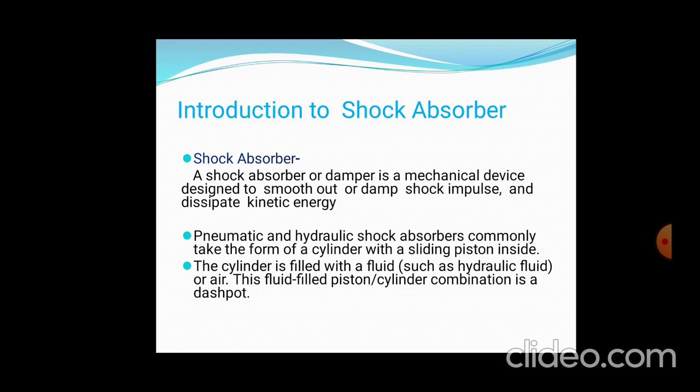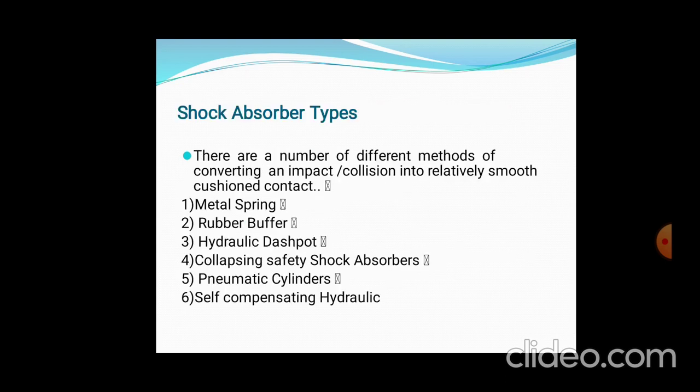This fluid-filled piston-cylinder combination is the basis of dashpot shock absorber types. There are a number of different methods of converting the impact of collisions into a relatively smooth cushioning effect. The six types are: first, metal spring; second, rubber buffer; third, hydraulic dashpot; fourth, collapsing safety shock absorber; fifth, pneumatic cylinders; and sixth, self-compensating hydraulic.